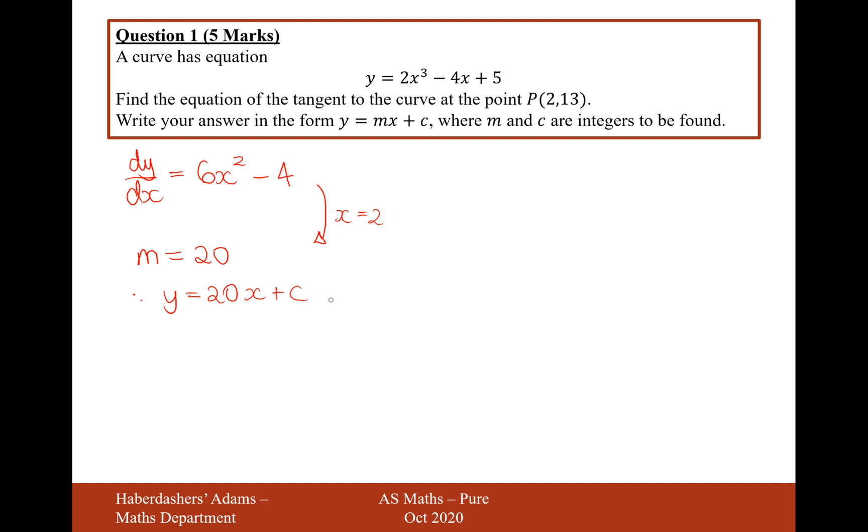We just need to now work out what c is equal to. So let's put in the coordinates of x equals 2 and y equals 13, and we're going to get 13 equals 20 times 2, which is 40, plus c.